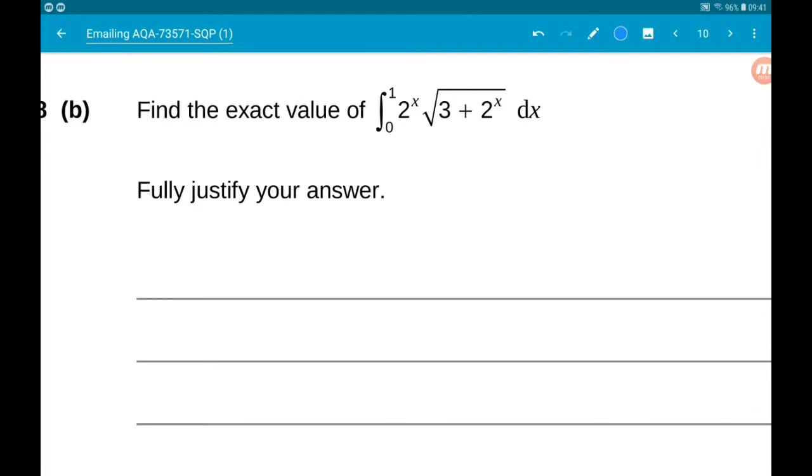Okay, now for part b, which is 6 marks. So the first really fun question on this paper. We want to find the exact value of the integral between 0 and 1 of 2^x times root(3 + 2^x) with respect to x. So part a has led us into part b. It gave us a clue as to what to start doing here.